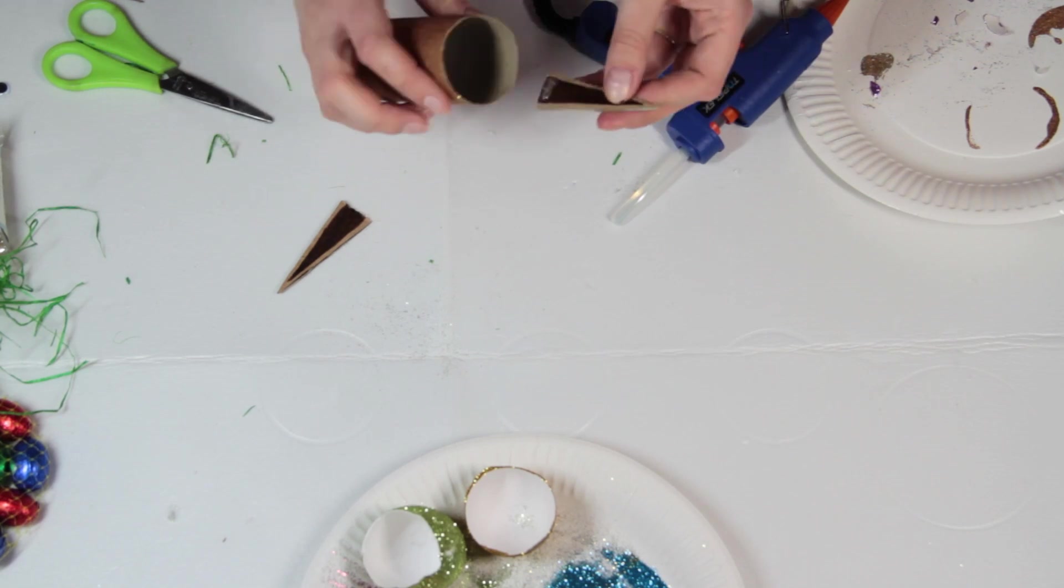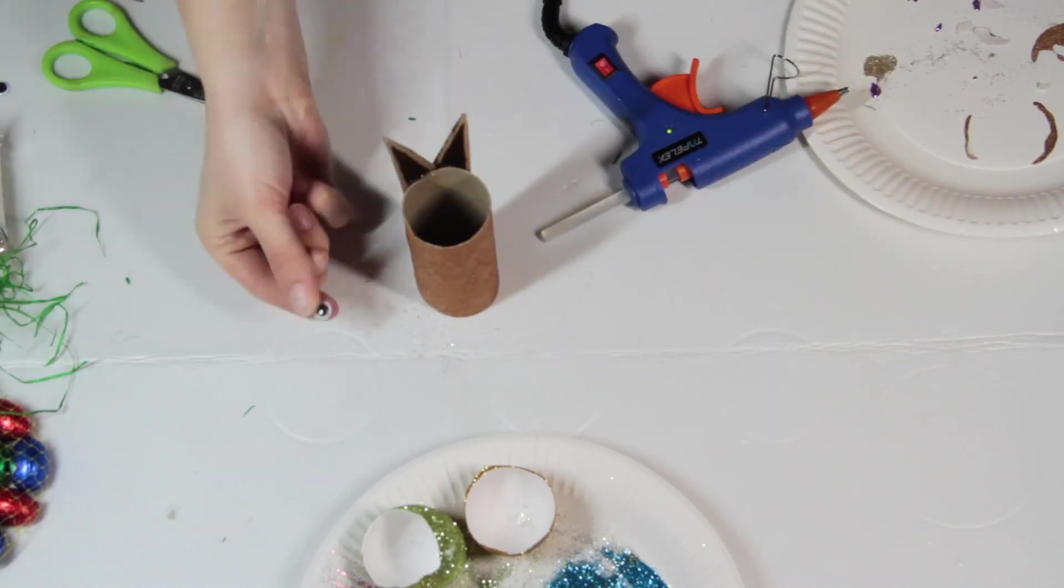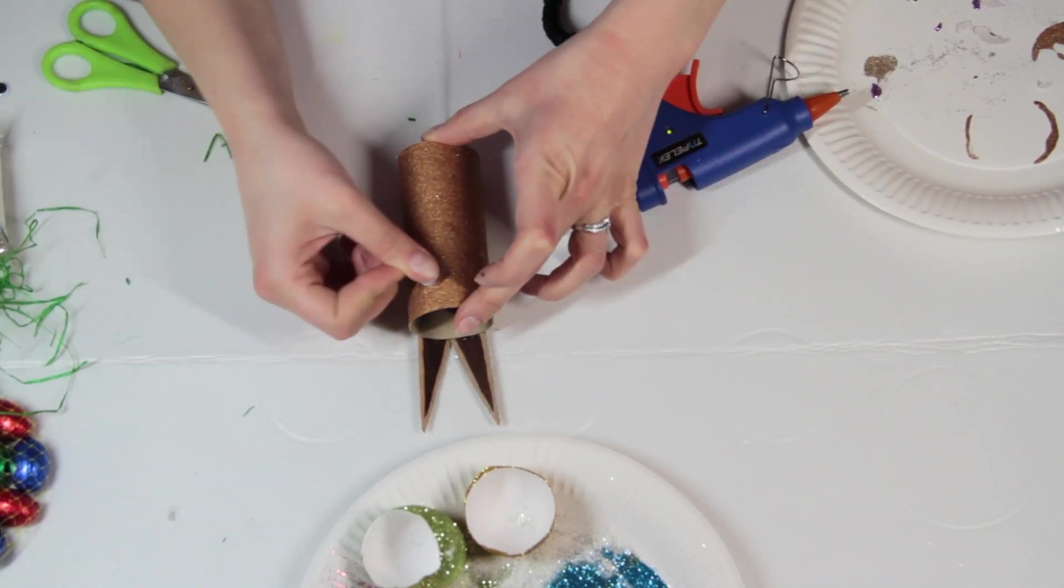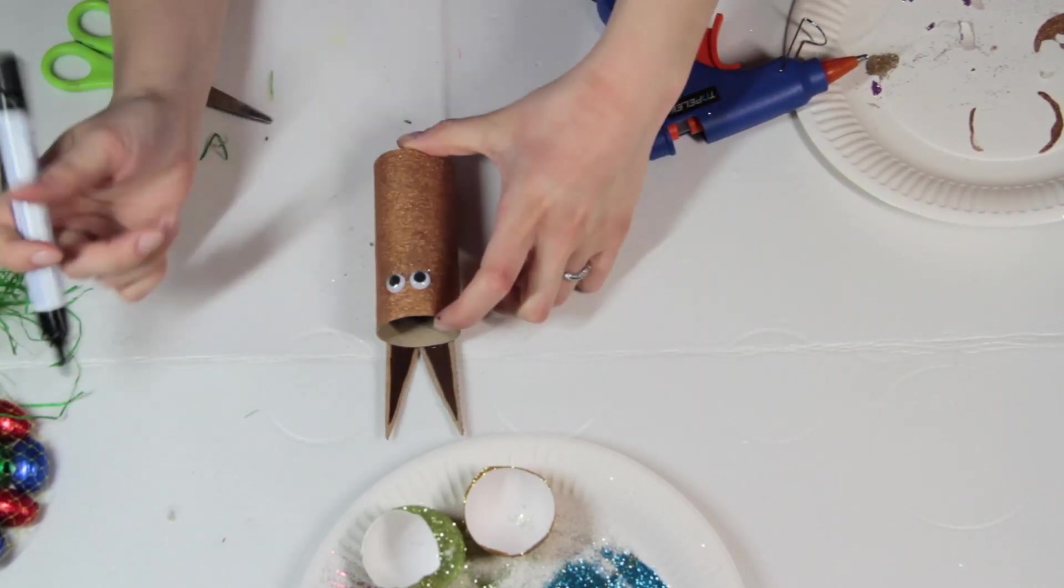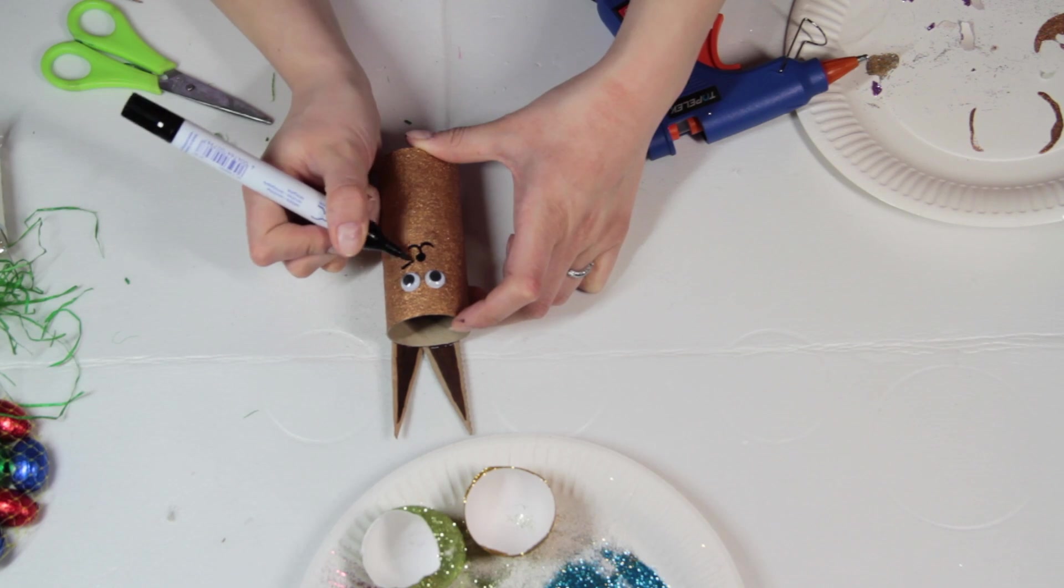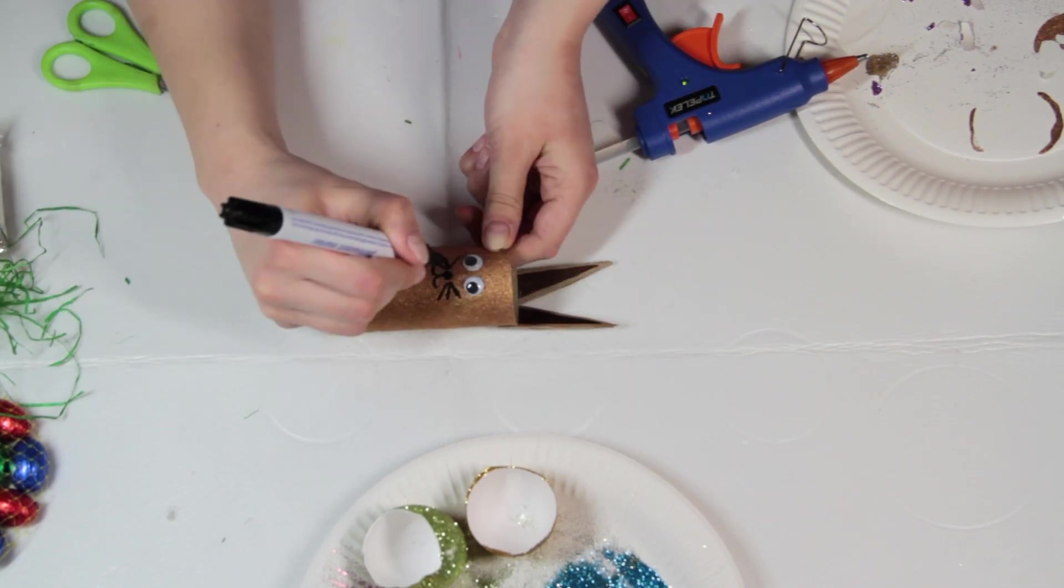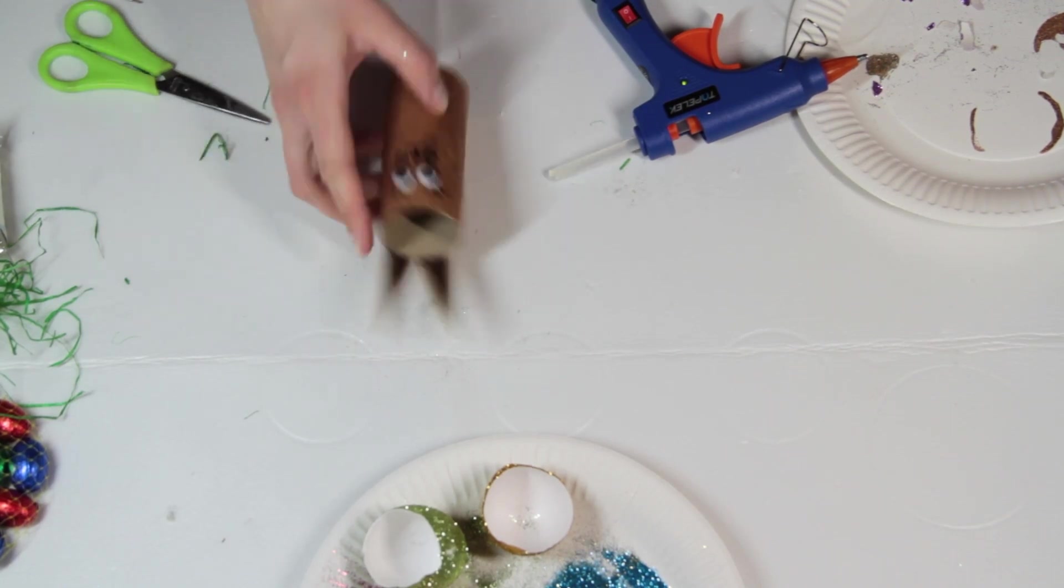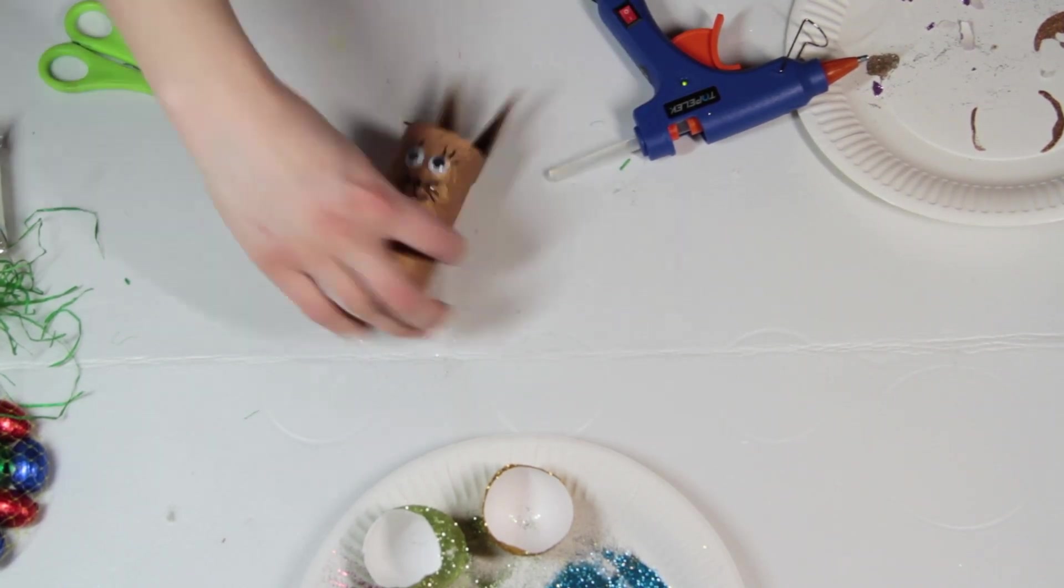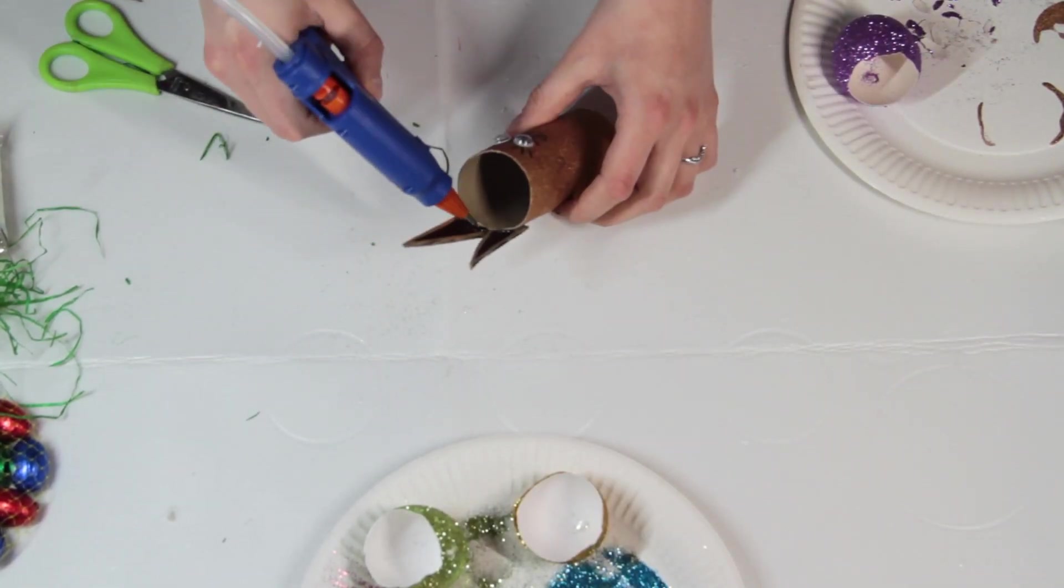Next one, we cut out two triangular shapes to create the ears of the bunny, and the bunny is actually just a glittery toilet paper roll. We put on some wiggly eyes and draw a face with just a marker.